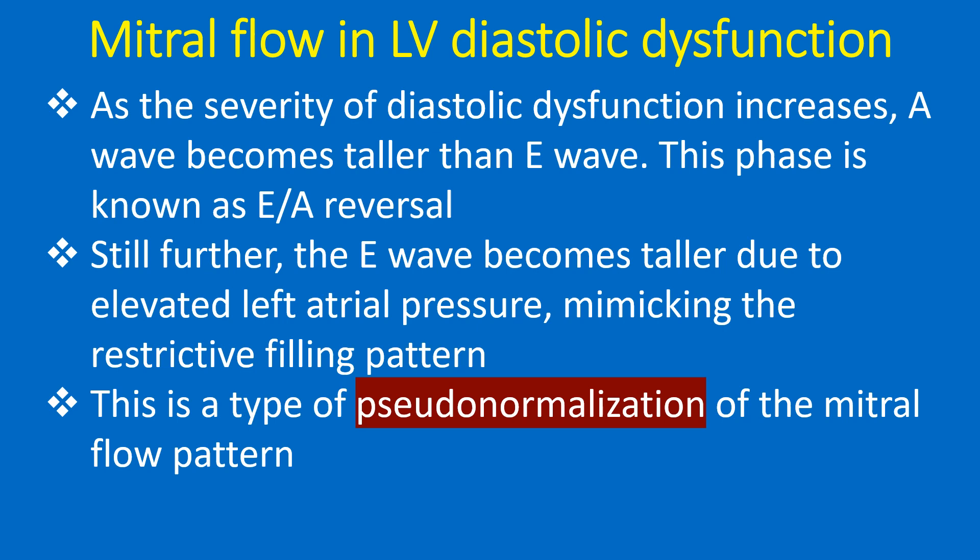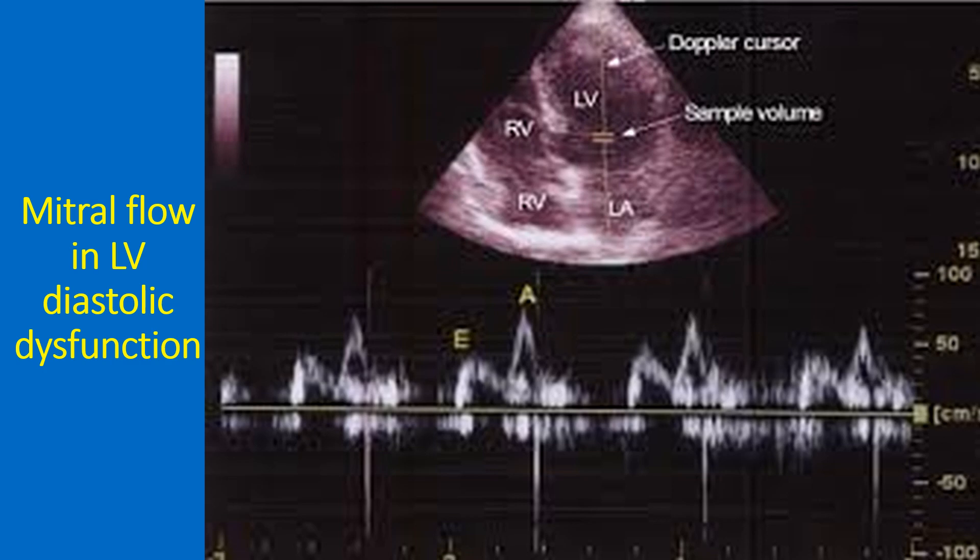Still further, the E-wave becomes taller due to elevated left atrial pressure, mimicking the restrictive filling pattern. This is a type of pseudo-normalization of the mitral flow pattern. The upper half of the image shows the apical 4-chamber view of the heart, with the Doppler cursor and sample volume seen along the midline of the left ventricle. The lower half of the image shows the Doppler flow pattern across the mitral valve.